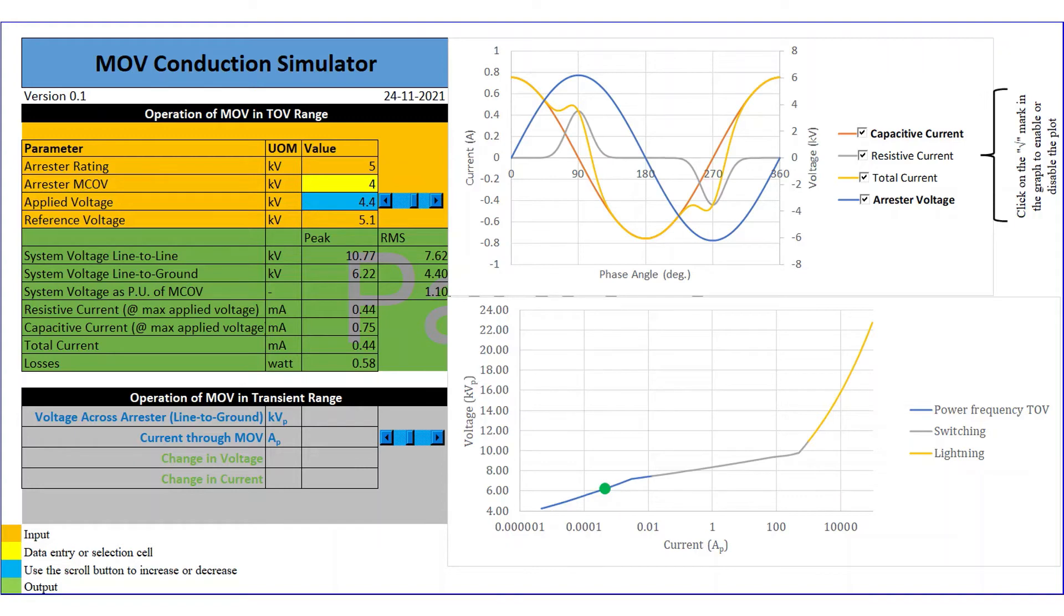To understand the MOV conduction further, I have created a MOV conduction simulator in Excel. This demonstration is for single MOV with continuous operating voltage of 4KV and rated voltage of 5KV. The simulator has two modes of operations, one for ToV range, second for transient range.